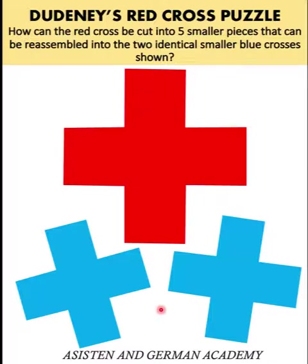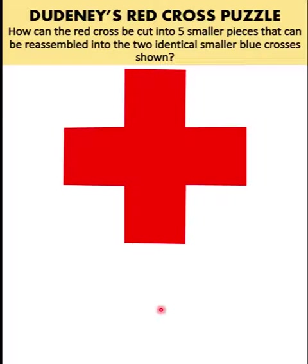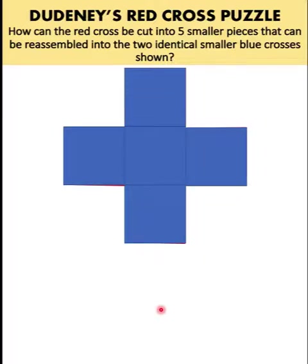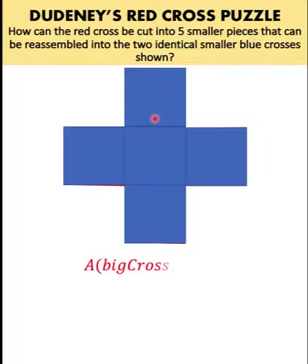Now let's solve this problem together. In order to quantify how big the two identical smaller blue crosses that we want to form, let's compute for the area of this red cross. You can think of this red cross as composed of five identical smaller squares. And if the side of this square is S, that means the area of one of these squares is S squared. And since there are five of those squares, then the area of the big cross is represented as 5S squared.